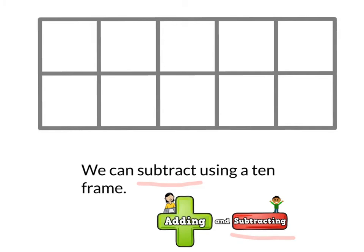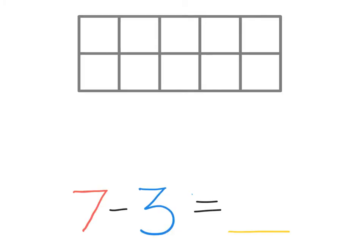We can subtract using a 10 frame. Let's take a look at the problem 7 minus 3 equals blank. This is our number sentence or our equation.